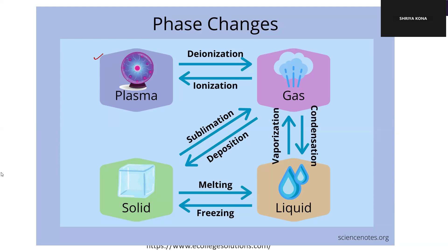Today we will talk about phase changes in thermodynamics. Phase changes means that solids can be converted into liquid via the process of melting, and liquid into gas via the process of vaporization, and gas into plasma via the process of ionization. All the reverse processes can also happen. There is a shortcut as well — you can go directly from solid to gas via the process of sublimation, and can go back via deposition.